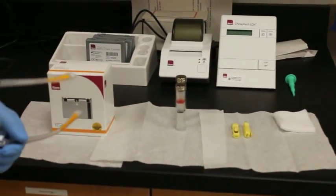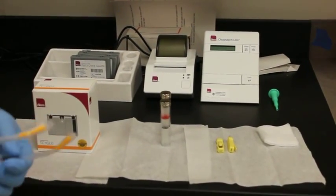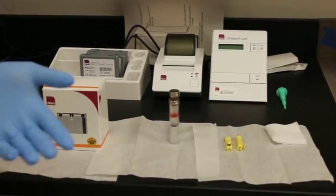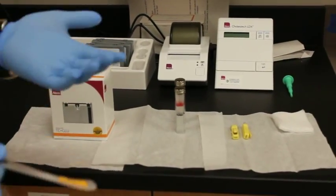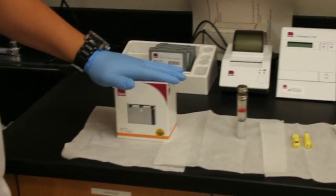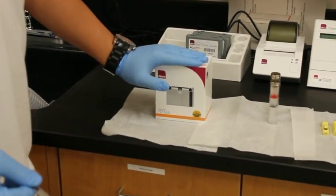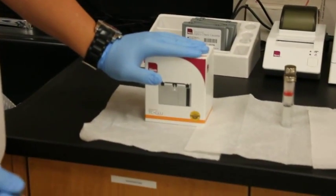This video is going to be on how to use the Cholestec LDX machine. What this does will measure cholesterol, glucose, HDLs, and LDLs. The big thing is it all depends on what cassette you're using. This cassette here is total cholesterol glucose, so that's what we will be getting readings back for today.